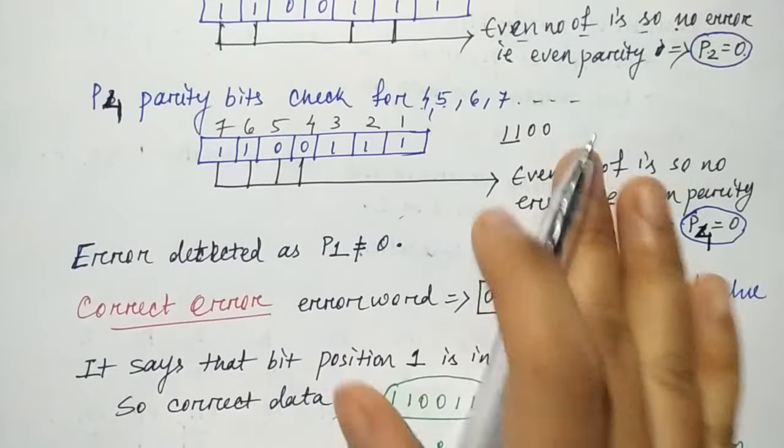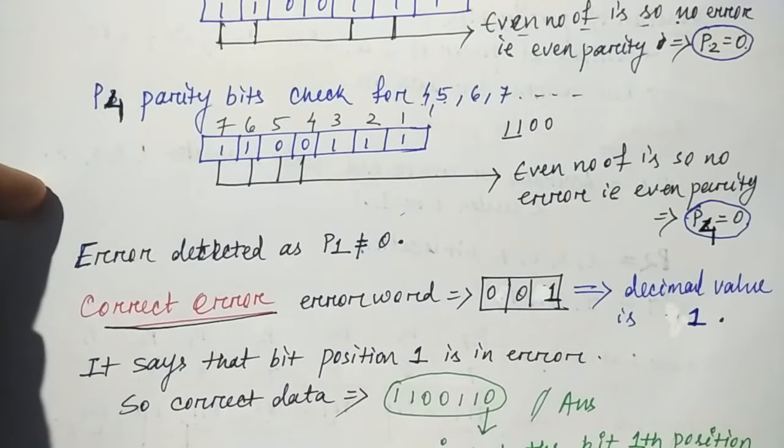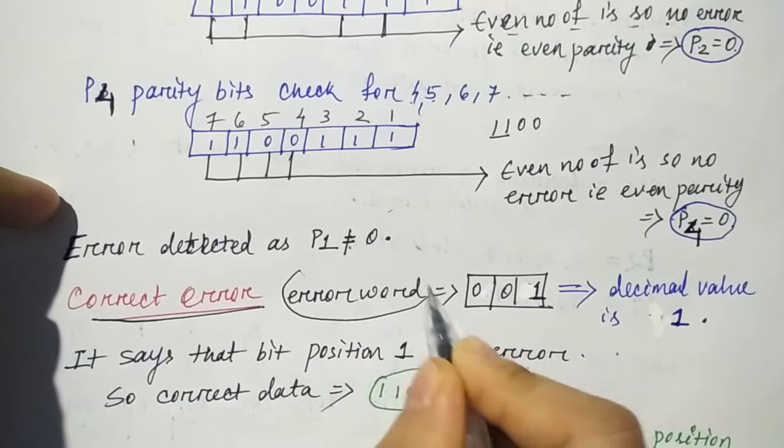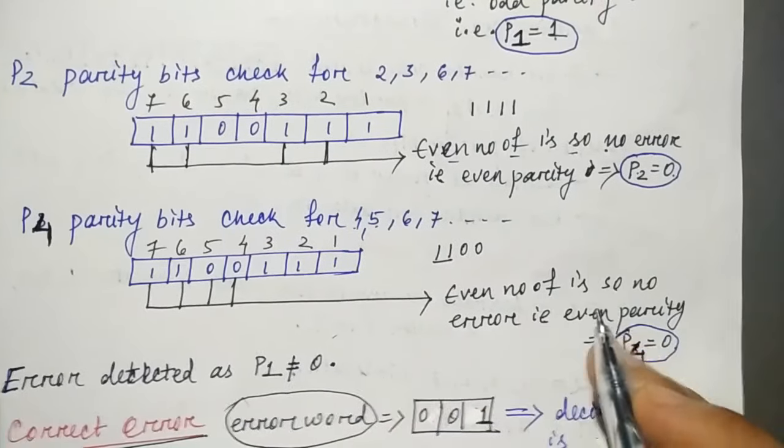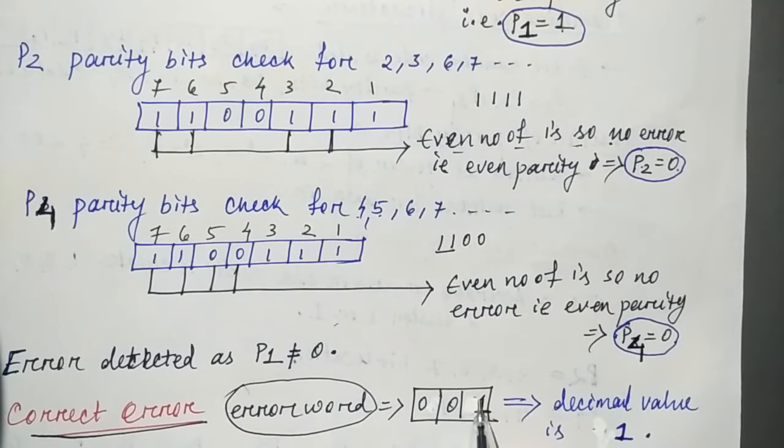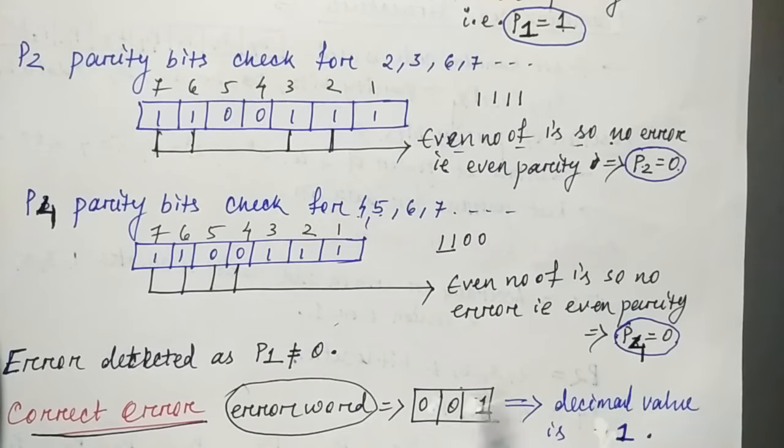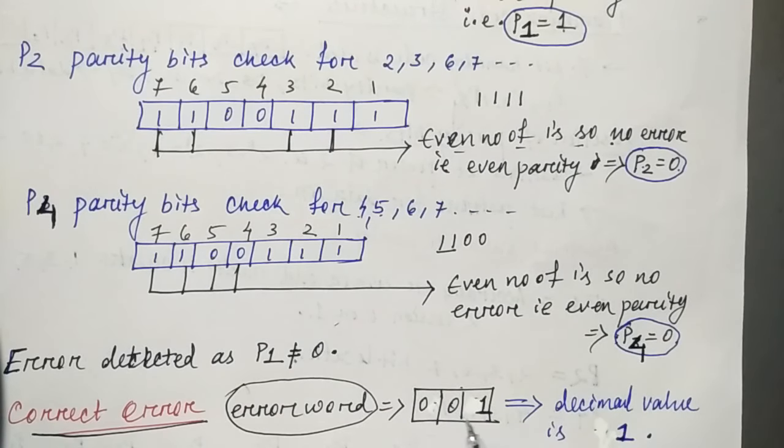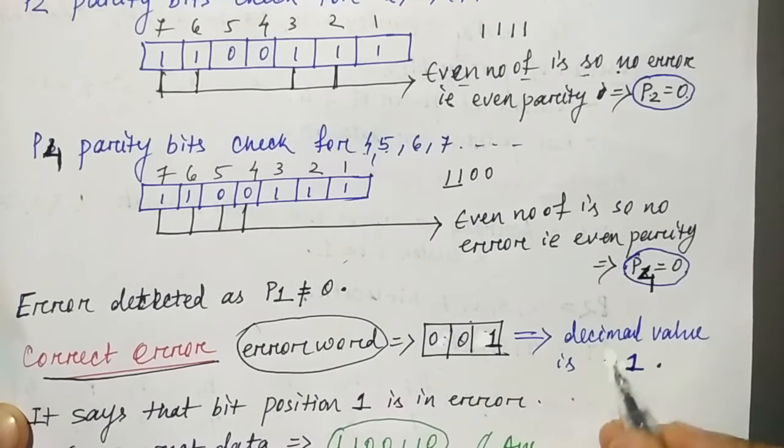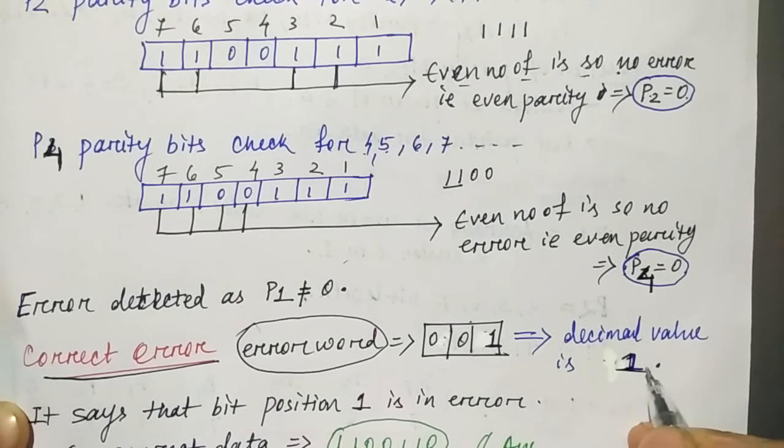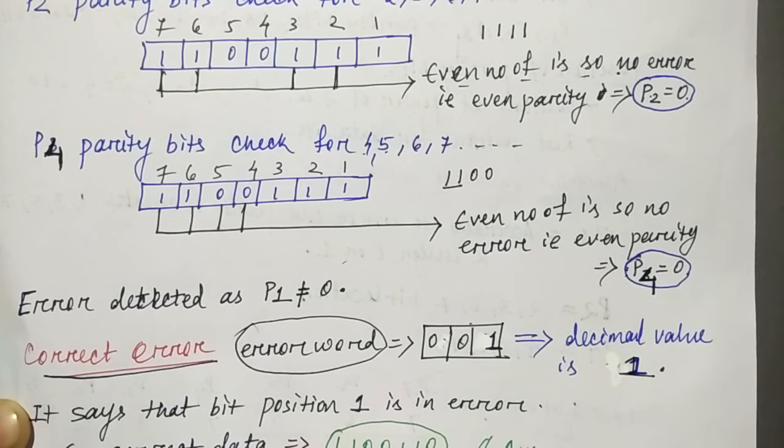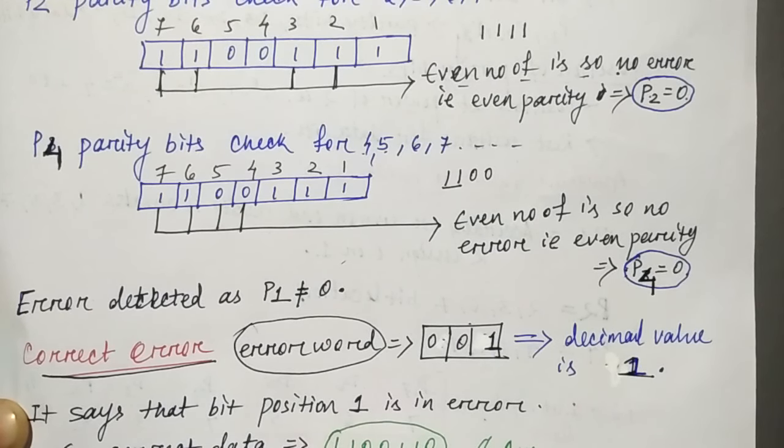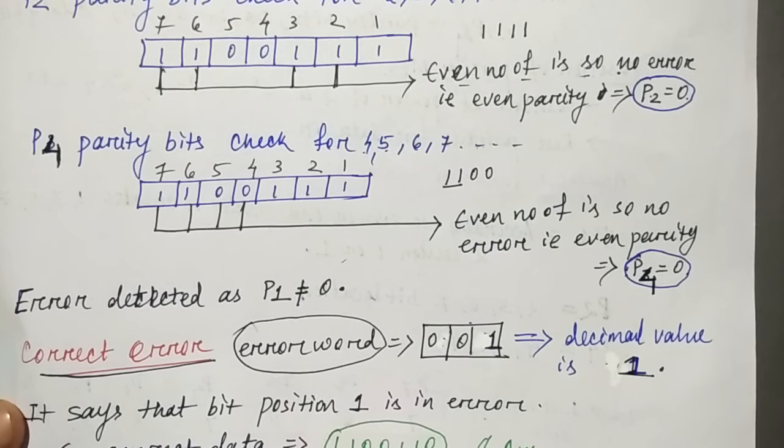Now what are we going to do in the third stage? We will correct the error. What is the error reward? We will combine the three P1, P2, and P4 values. P1 is 1, P2 is 0, and P4 is 0. So this is 001. What is the decimal value? It is 1. This means the error reward by collecting the value of each parity and converting it to decimal, whatever value you have got, in that particular position you have the error.